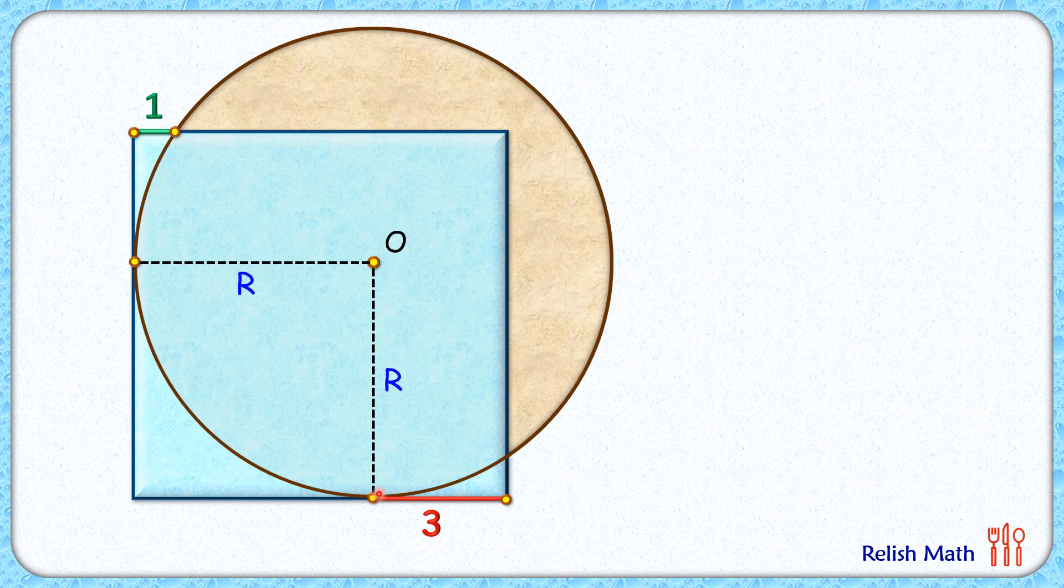Now we know that radius is perpendicular to the tangent and thus this angle here is 90 degrees and so is this angle as 90 degrees. This is angle of a square, thus 90 degrees, and thus this quadrilateral here is a square with each side length as R centimeters.